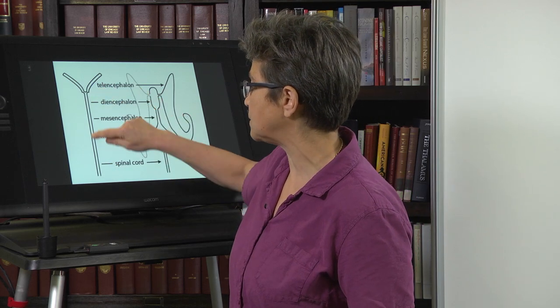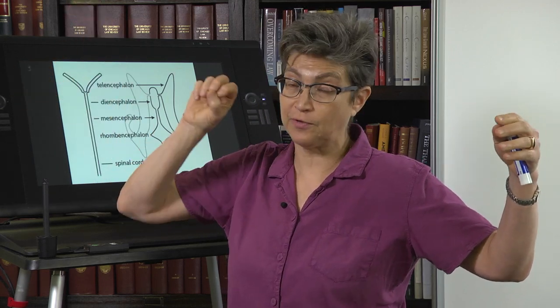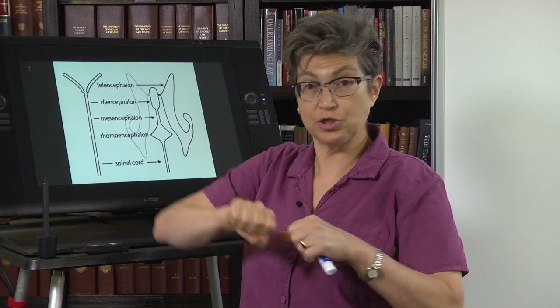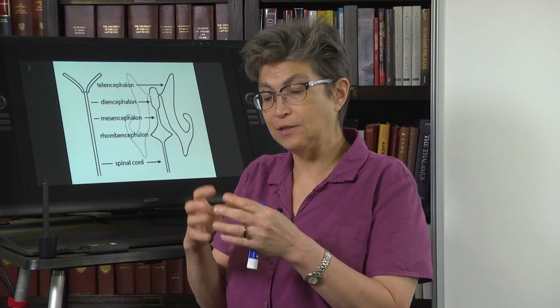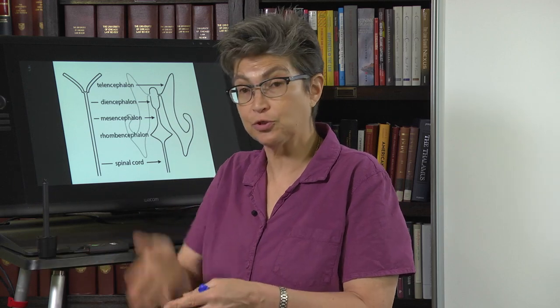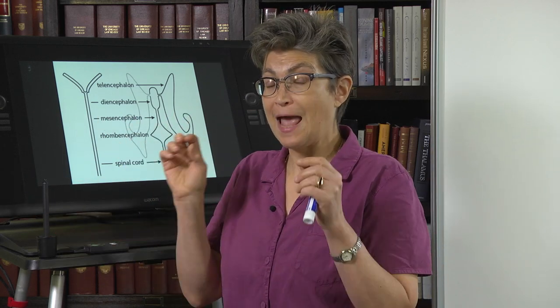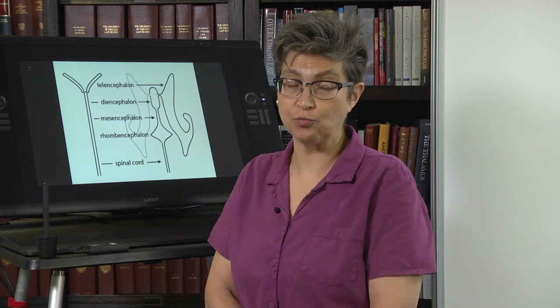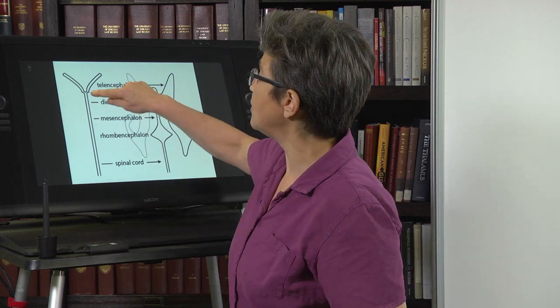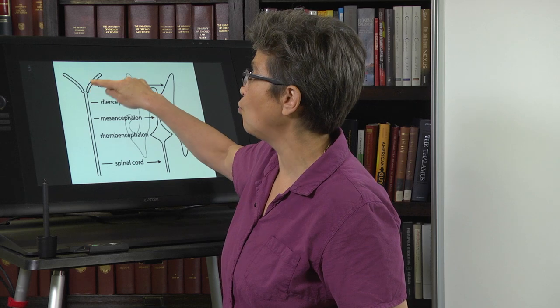Initially, when we have the three vesicles — the prosencephalon, mesencephalon, and rhombencephalon — there's just one tube. When the diencephalon and telencephalon form, there's still one tube. But very quickly, the telencephalon invaginates to produce two hemispheres. At the time of that invagination, right around day 28 to day 29 of gestation, the tube forms a Y — one tube goes for the right hemisphere and one goes for the left hemisphere.